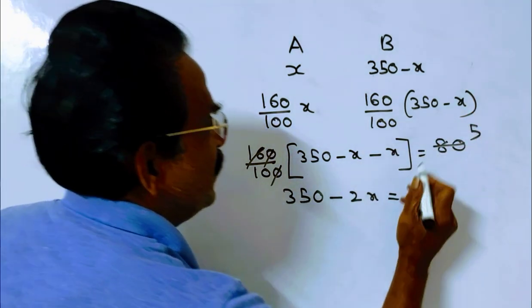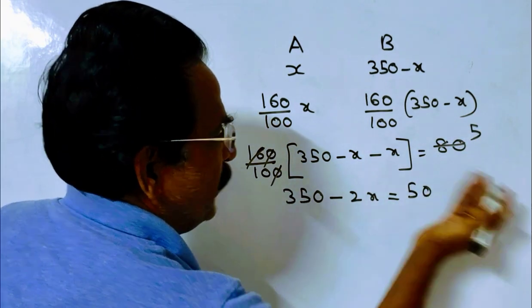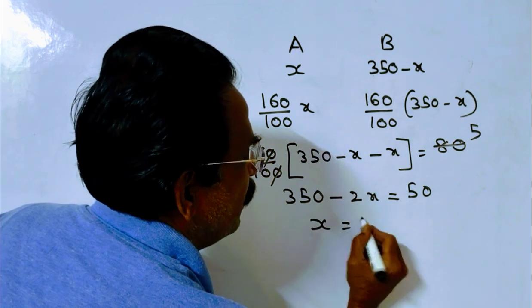350 minus 2X is equal to 50. 2X is equal to 300. X is equal to 150.